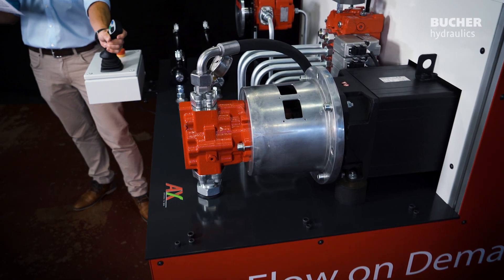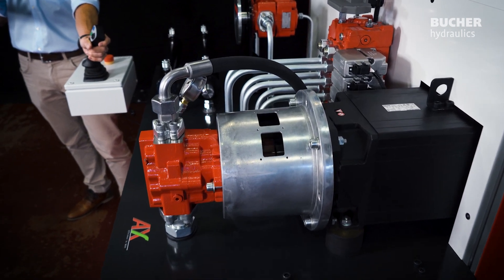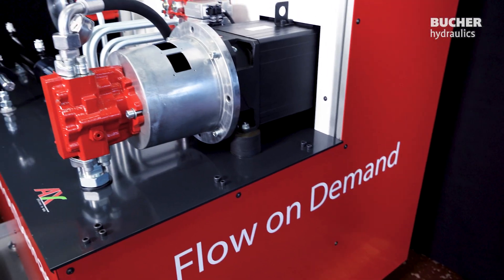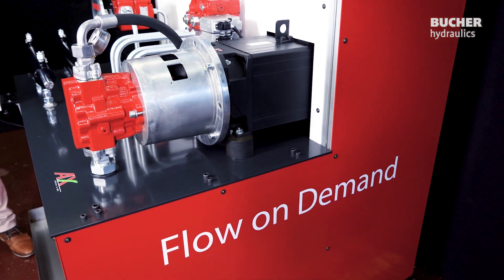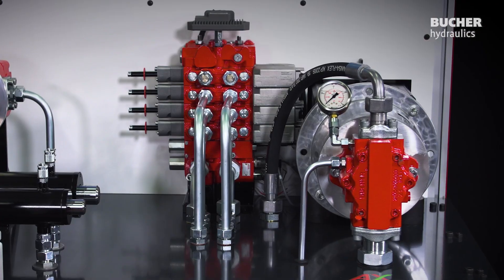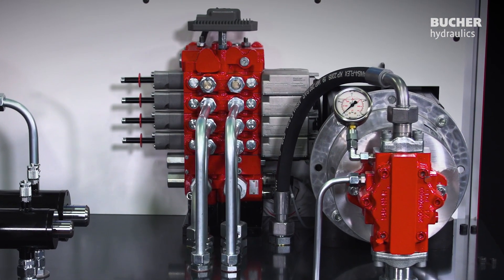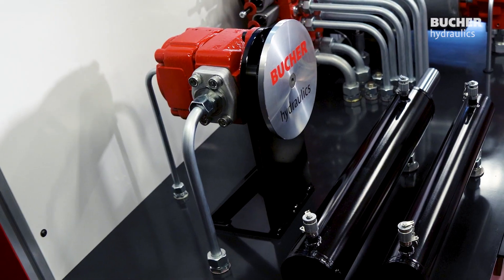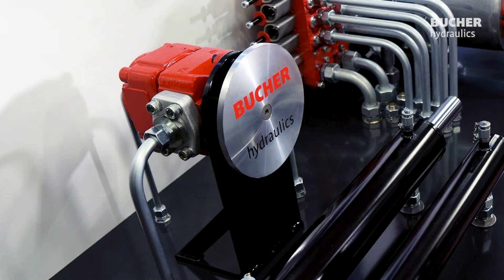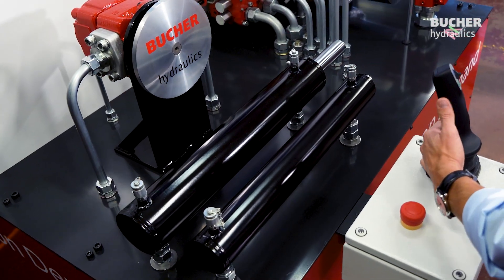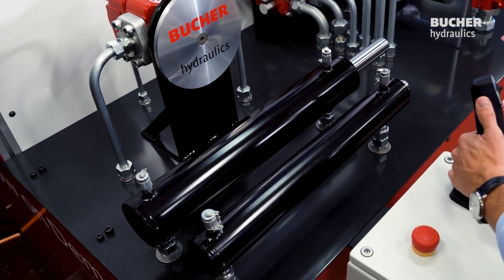But let me first describe what you're seeing. The system consists of a variable speed electric motor that drives our AX24 pump. A standard HDS24 flow sharing block distributes the flow to where it is needed. We also added one of our QX pumps and two small cylinders in order to better illustrate the behavior of the solutions.